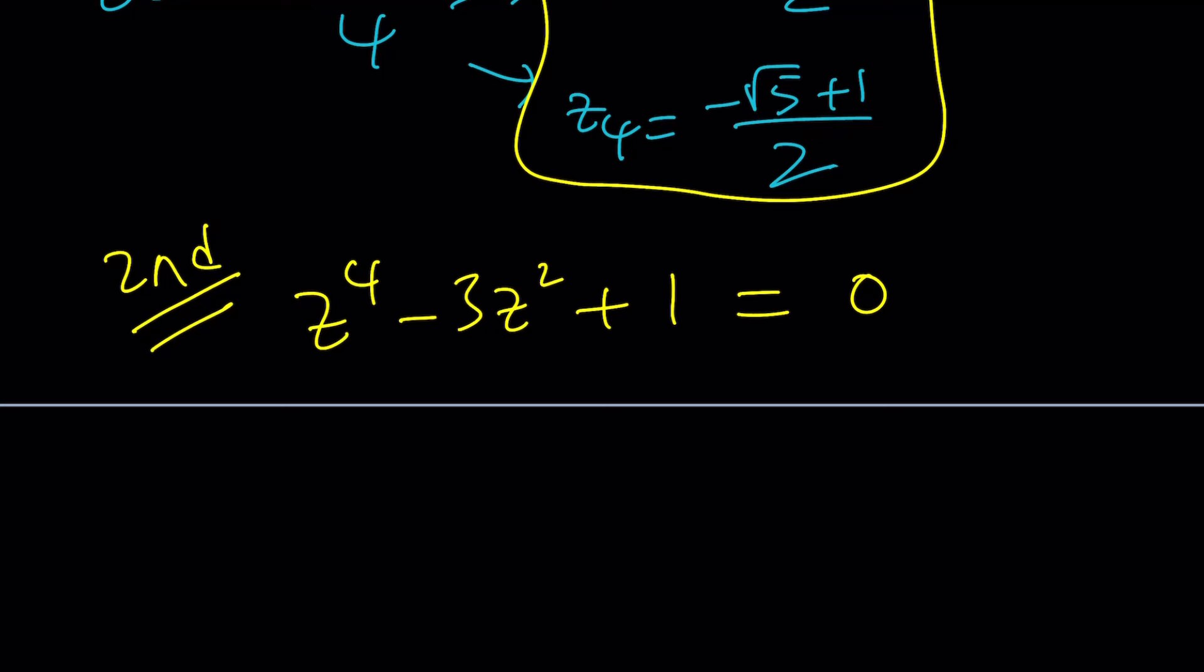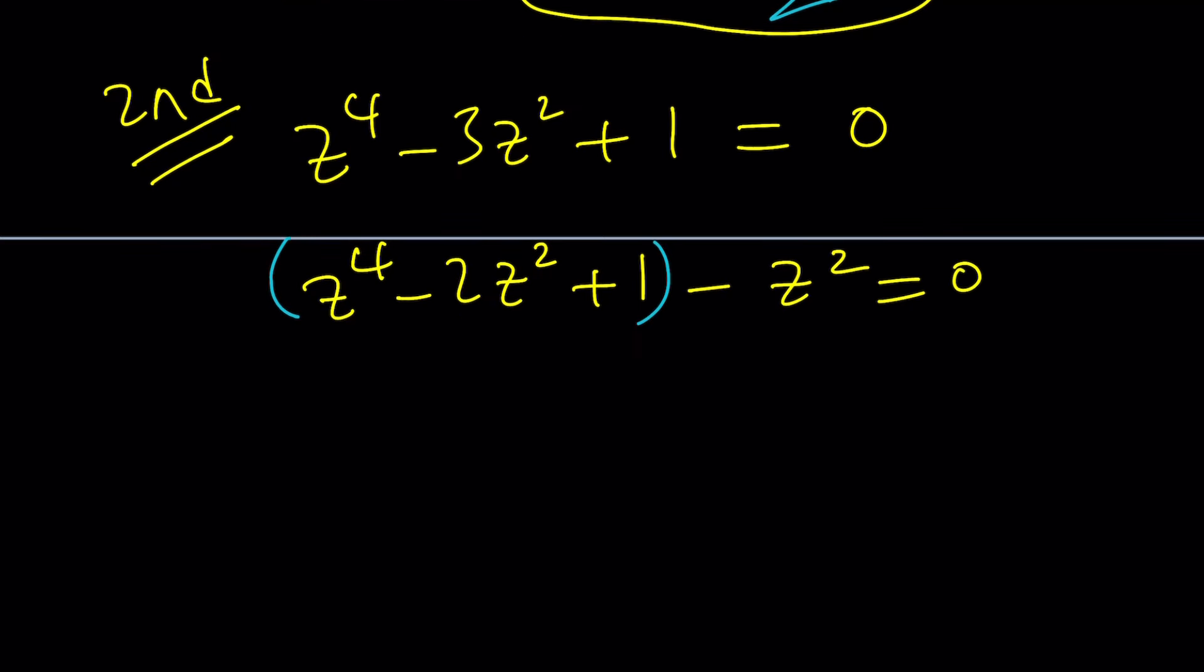I can write this as z to the fourth minus 2 z squared plus 1 minus z squared, because minus 2 z squared minus z squared is minus 3 z squared. Notice that this part is a perfect square and I can write it as z squared minus 1 squared minus z squared.